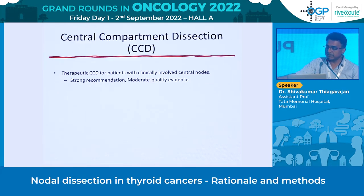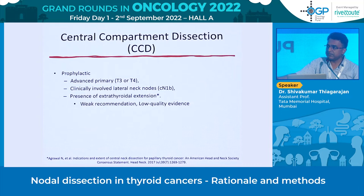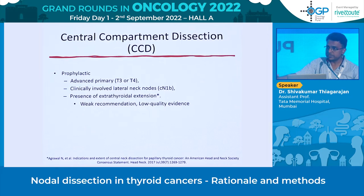Therapeutic central compartment dissection is indicated when there is a clinically involved central compartment node identified pre-operatively — clinically or radiologically. This is a strong recommendation based on moderate quality evidence. Prophylactic central compartment dissection is more controversial due to morbidity from recurrent laryngeal nerve palsy and hypocalcemia. It is indicated in advanced primary tumors (T3, T4), clinically involved lateral neck nodes, and extrathyroid extension — weak recommendations with low quality evidence, but seen in clinical practice.